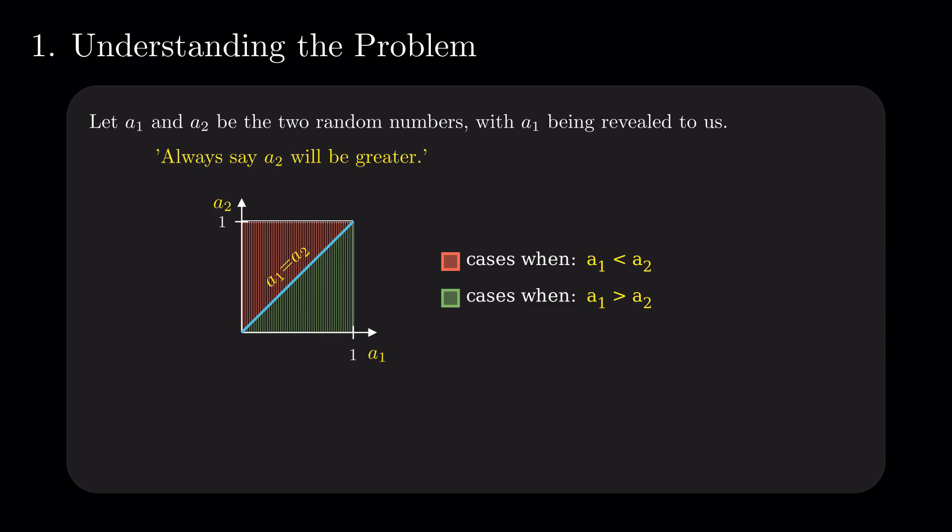Given that the two areas are equal, we have as good of a chance that A2 is the greater of the two, as that A1 is greater. Hence, the win rate of this strategy cannot be anything other than 50%. It's no better for us to always say that A2 is lower, given that this strategy also has a 50% probability of success.